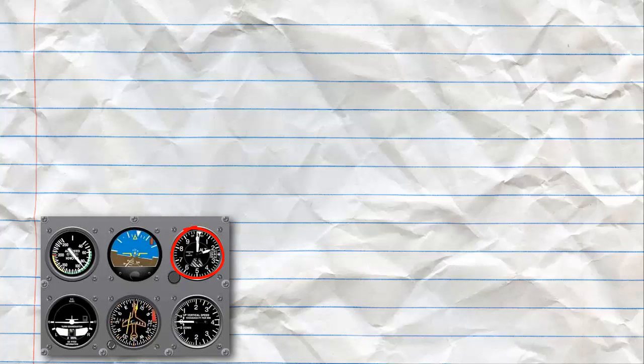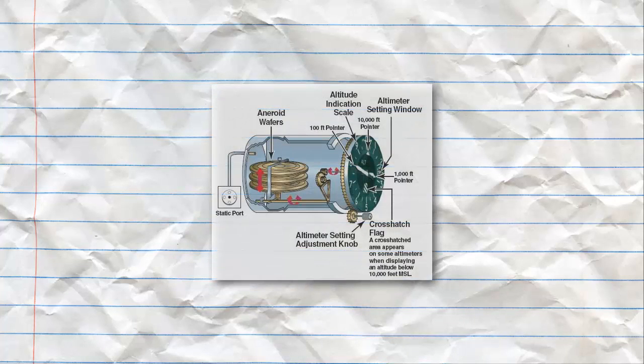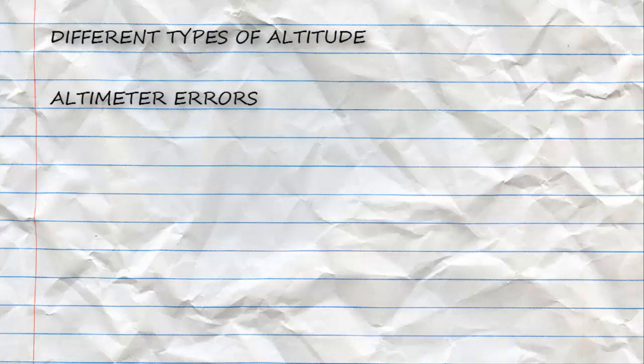In this lesson we are going to talk about altimetry and we're referring to our altimeter. We rely on our altimeter to tell us how high above the ground that we are flying. It's an incredibly important instrument, however we as pilots must be aware of a few different factors concerning it. In this lesson we will review different types of altitude and the effects temperature and pressure can have on altimeters.